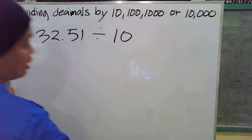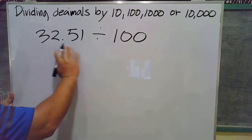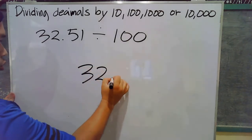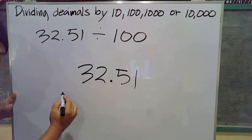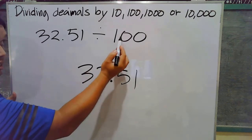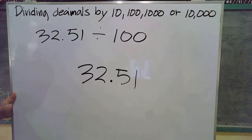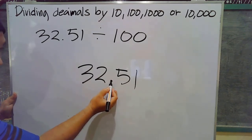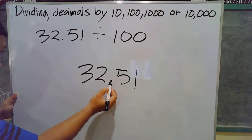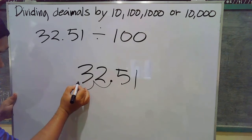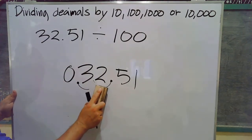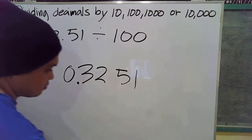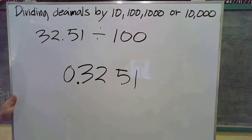How about 32.51 divided by 100? First, just copy our dividend, which is 32.51, and move the decimal point to the left depending on how many zeros our divisor has. In this case, 100 has two zeros, so we need to move two steps to the left. Counting: one, two — our answer will be 0.3251.